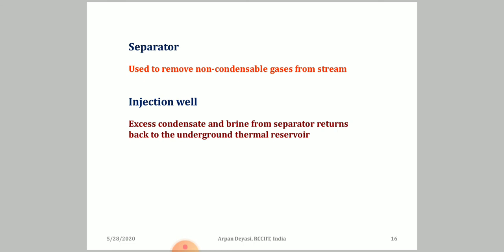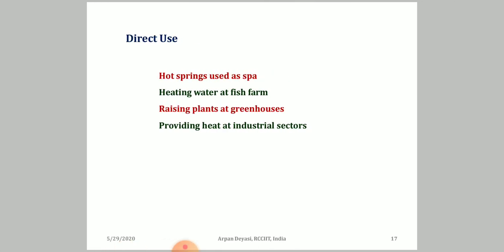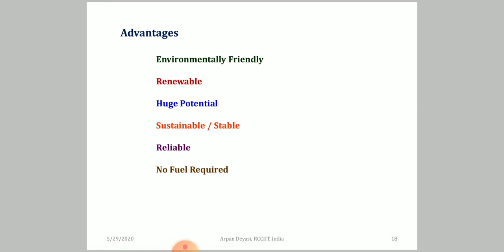Location is very important for geothermal energy because you must find where the energy is available before building mechanical infrastructure, as the initial cost is very high. Direct uses of geothermal energy include: using hot springs as power, heating water in fish farms, raising plants in greenhouses, and providing heat to industrial sectors. Its advantages are that it is environment-friendly, renewable, has huge potential, is sustainable, stable, reliable, and no external fuel is required — except for the binary cycle plant where a secondary liquid is used to maintain operation, but that is not an external fuel.